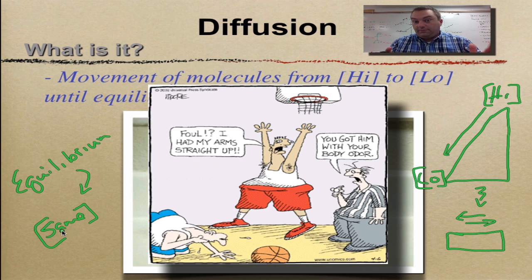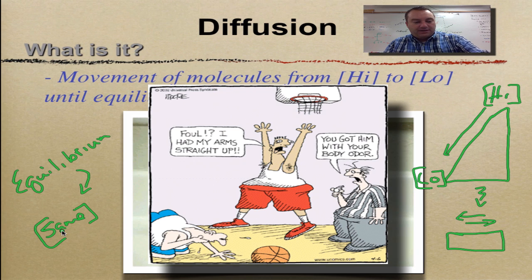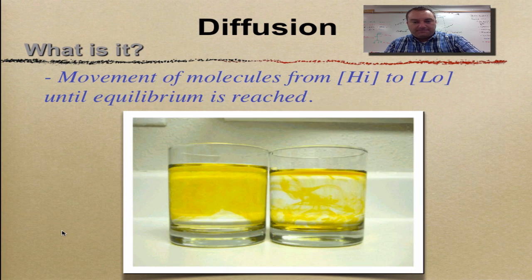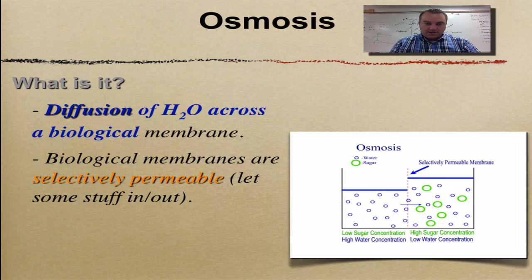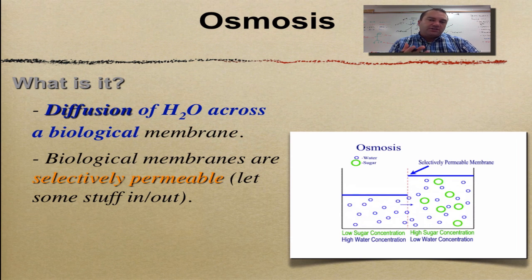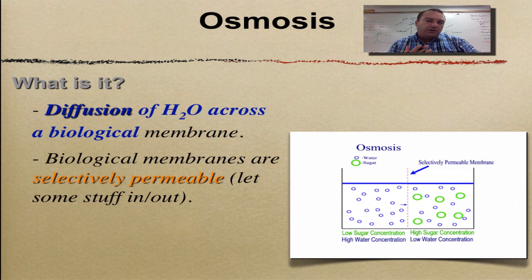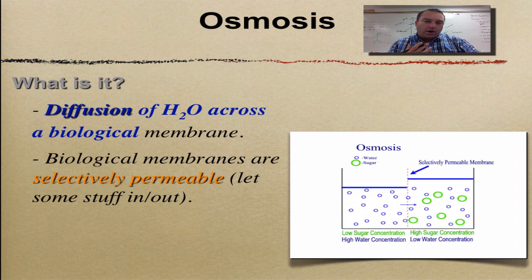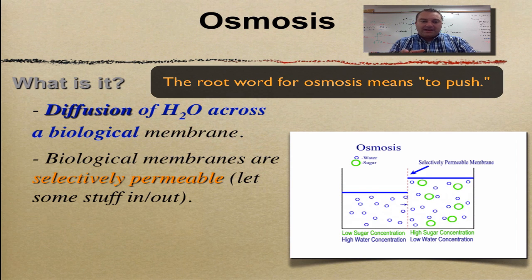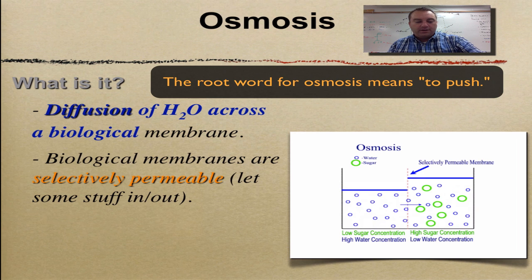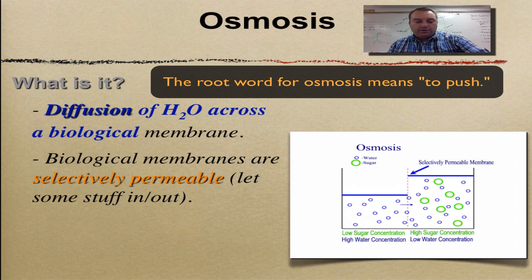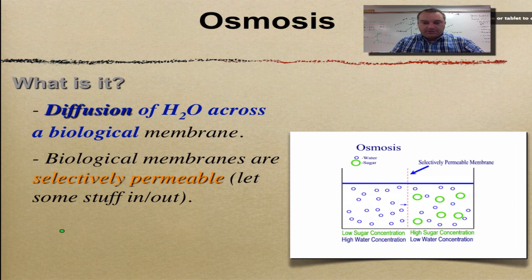Diffusion could be perfume, cologne, body odor. Now let's move on to osmosis. Osmosis is the diffusion of water across a biological membrane — think of that cell membrane we learned about in the previous episode.